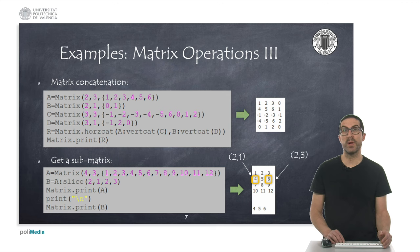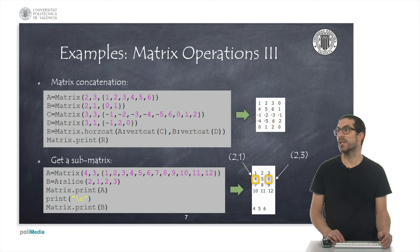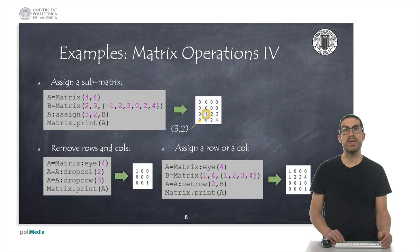We can access a sub-matrix using the slice method. We must pass the coordinates of the first element and the last element of the sub-matrix. In this example, the first coordinate is element 2,1 and the last element is 2,3. In the same way, we can assign a sub-matrix to an existing matrix using the assign method.